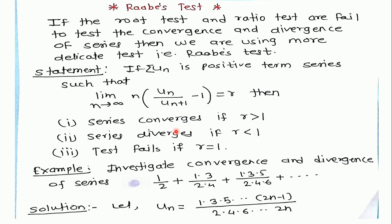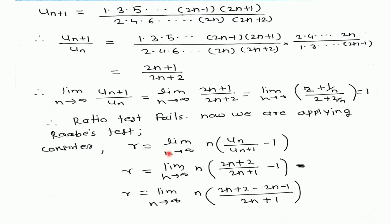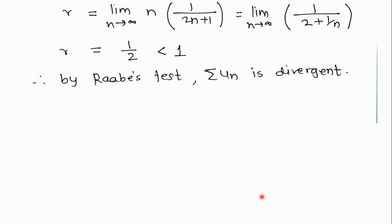Since the ratio test failed, we apply Raabe's test. The statement is: limit as n tends to infinity of n·(UN/UN+1 − 1) = R. We calculate this limit by putting in the value of UN/UN+1, which is the reciprocal of UN+1/UN already calculated. Substituting and simplifying, these are straightforward calculations.